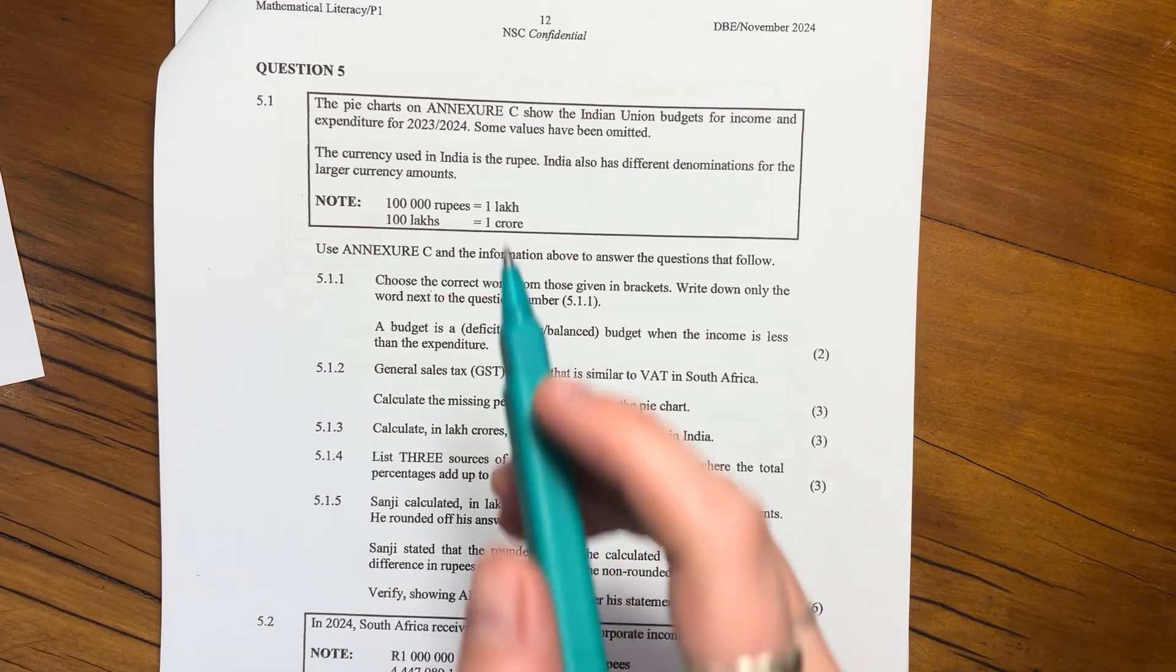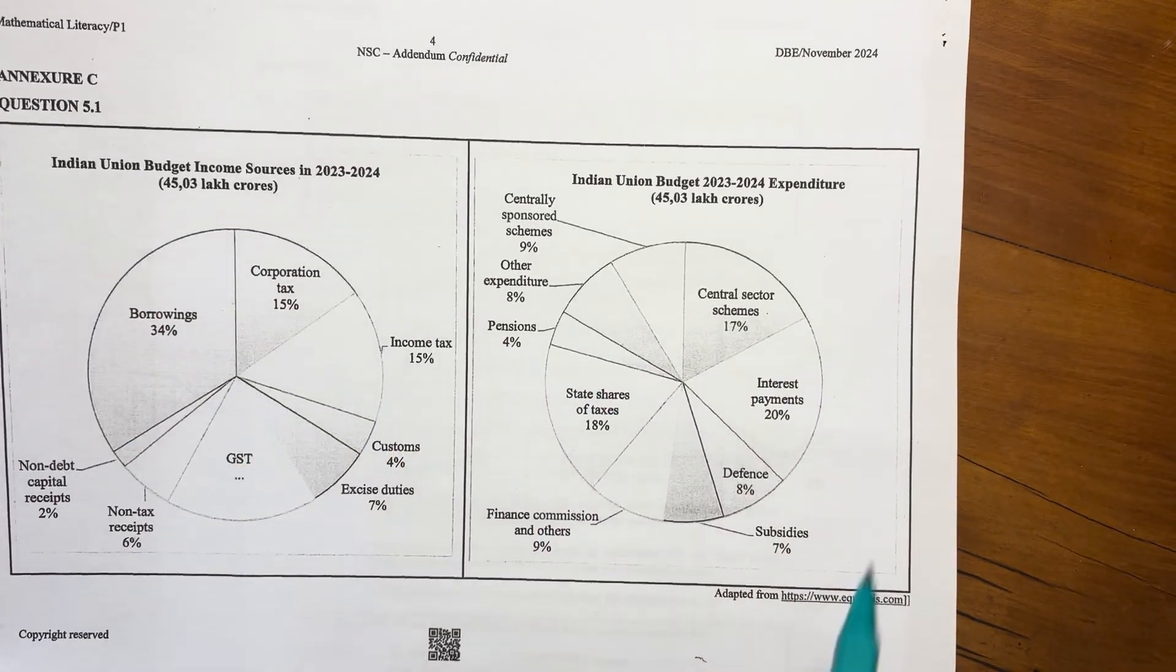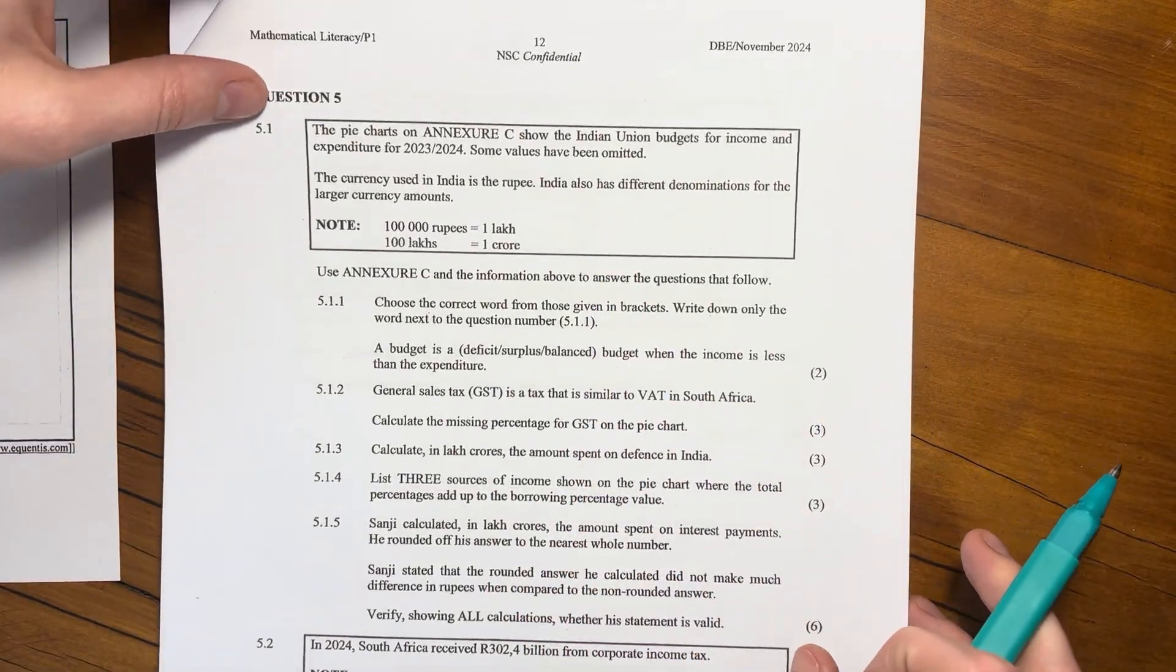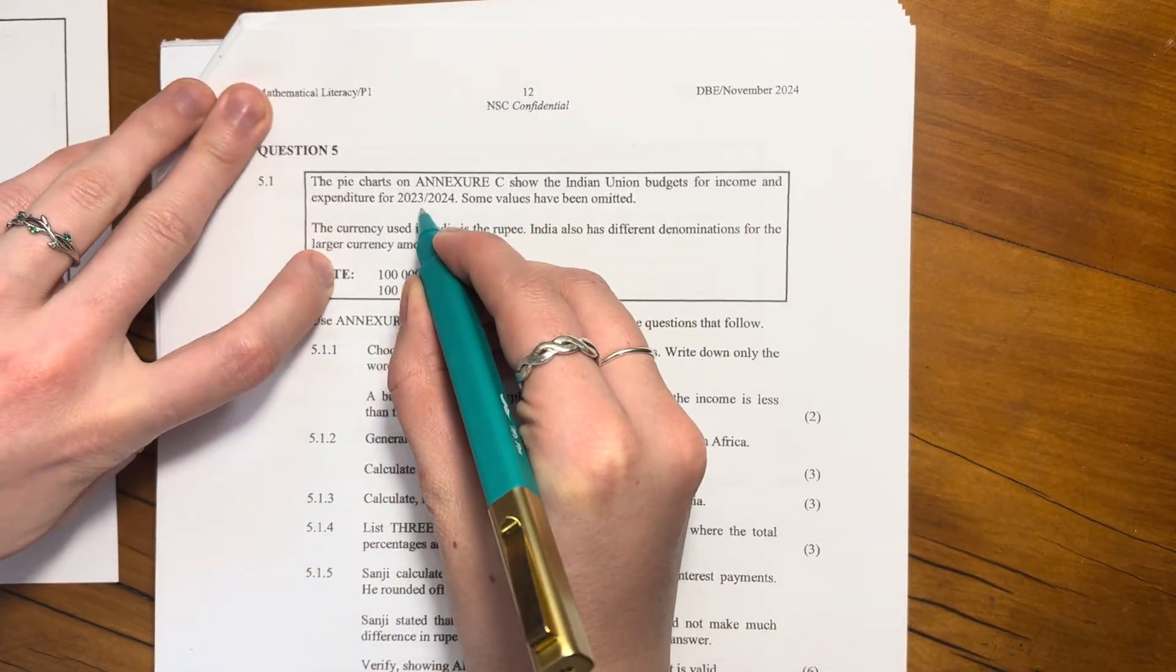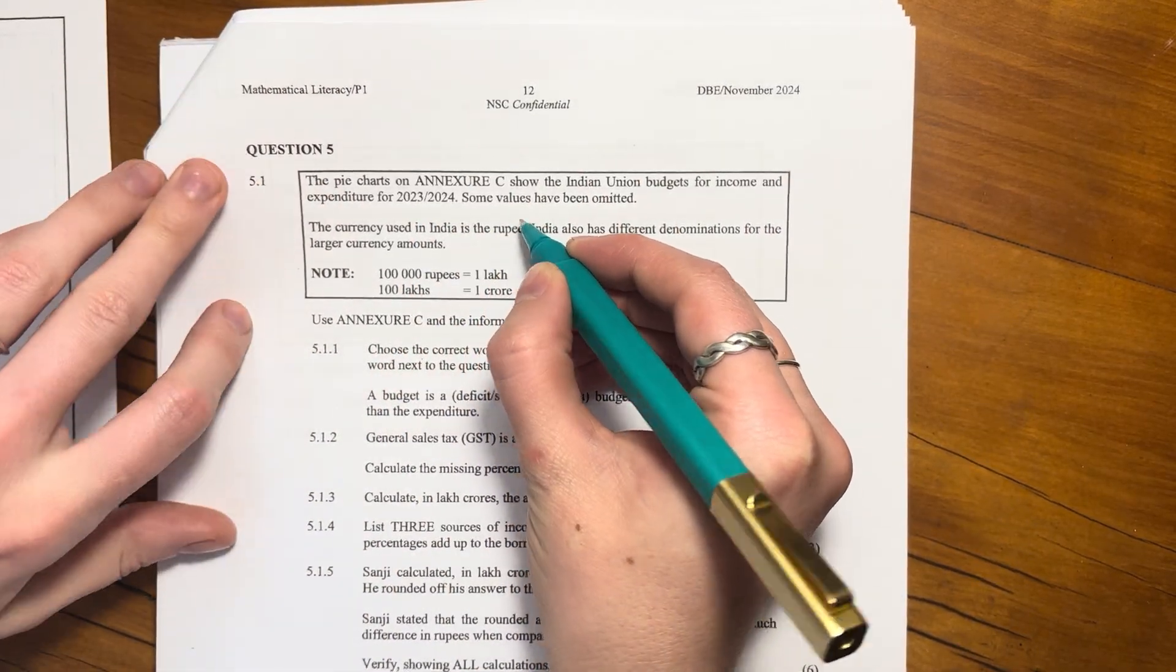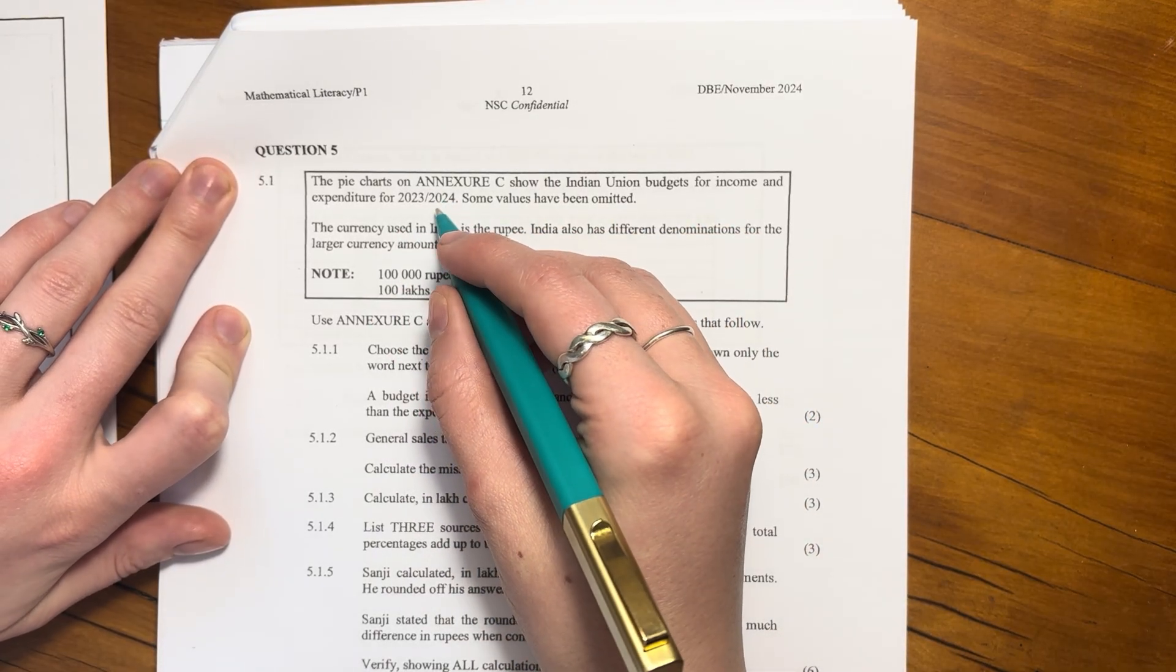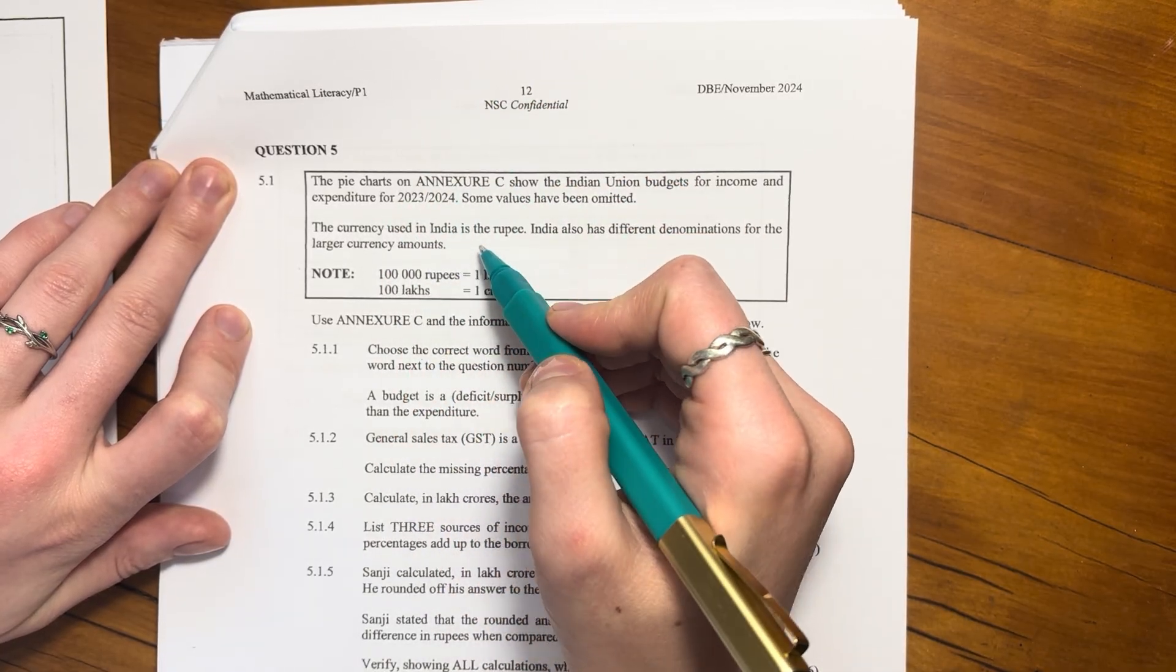Let's look at question five, the pie chart on Annexure C. So as soon as you see that, you can find Annexure C. Here's Annexure C. We're going to be working with this. So the Indian Union budgets for income and expenditure for 2023/2024. And the reason that's like that is that it's done along the same lines as tax, because obviously income is tax based. And so they do the budget that way as well.